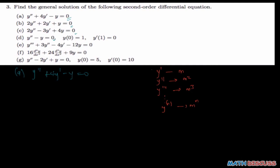So the first thing is to form the auxiliary equation. For y'' I represent it with m squared, plus 4y' that'll be 4m, then since y has no derivative that's m to the power 0, so that's minus 1 equals 0. We solve this quadratic equation. Using the quadratic formula, we get m equals 2 plus or minus root 5·i.